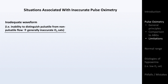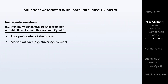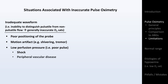Situations associated with an inadequate waveform include poor positioning of the probe, motion artifact from shivering or a tremor, low perfusion pressure — that is, a poor pulse — which can be seen in shock, in peripheral vascular disease affecting the limb on which the pulse ox probe is placed, and hypothermia. Sometimes probes are just finicky, particularly ones meant to be left on the body for extended periods of time, in which case you may need to try another location.